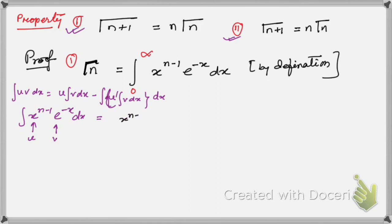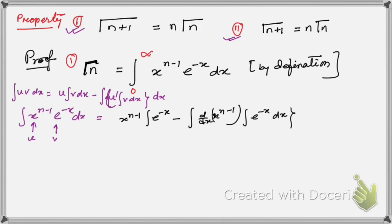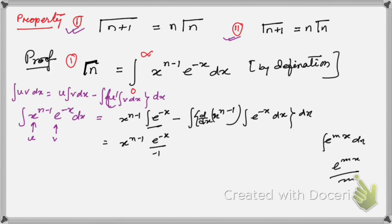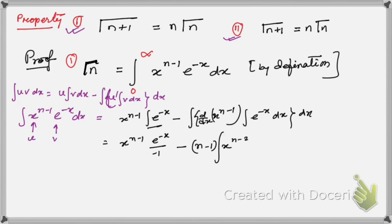So applying integration by parts: first function x^(n−1), then integration of e^(−x) gives e^(−x)/(−1), minus then derivative of x^(n−1) which is (n−1)·x^(n−2), times the integration of e^(−x) which is e^(−x)/(−1), giving a plus sign. So we use the rule that ∫e^(mx) dx = e^(mx)/m.